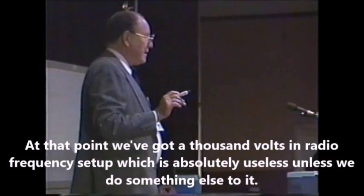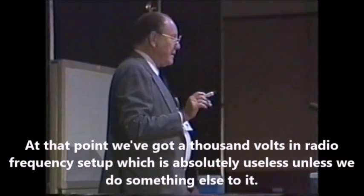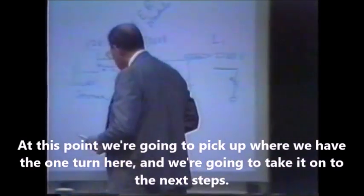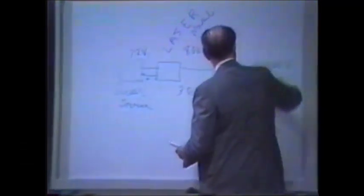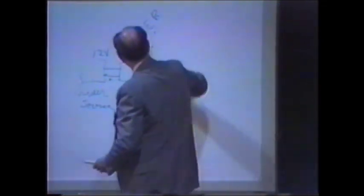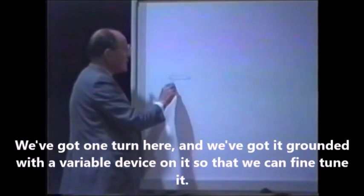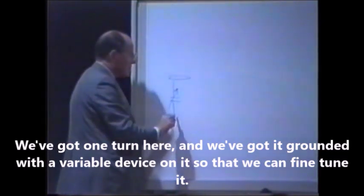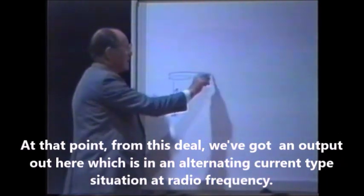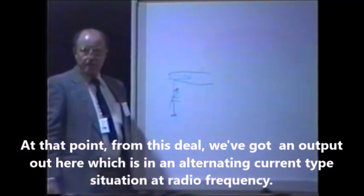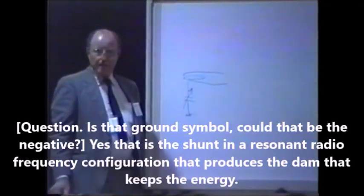At that point we've got 1,000 volts in a radio frequency setup, which is absolutely useless unless we do something else with it. We're going to pick up where we have the one turn and take it to the next steps. We've got one turn grounded with a variable device so we can fine-tune it, and from this we've got an output which is an oscillating, alternating current at radio frequency.